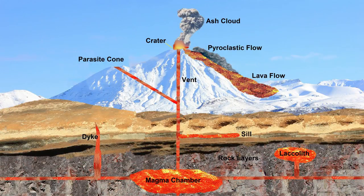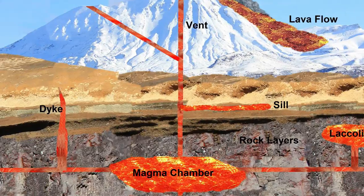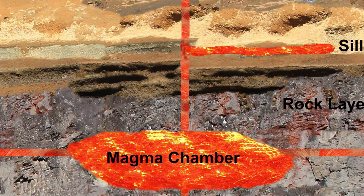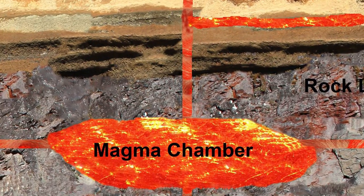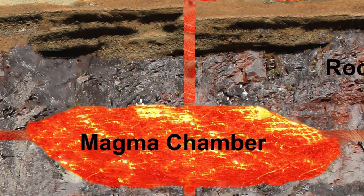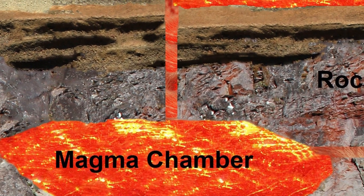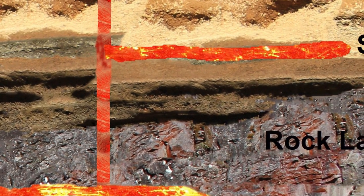Magma from the mantle enters weaknesses in the crust caused by plate movement. A magma chamber may form. From the magma chamber, the magma may do one of the following things.